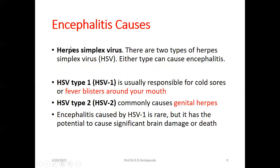Herpes simplex virus (HSV) comes in two types. Either type can cause encephalitis — HSV type 1 or HSV type 2. HSV type 1 is usually responsible for cold sores or fever blisters around the mouth. HSV type 2 commonly causes genital herpes. Encephalitis caused by HSV1 is rare, but it has the potential to cause significant brain damage or very rarely death.